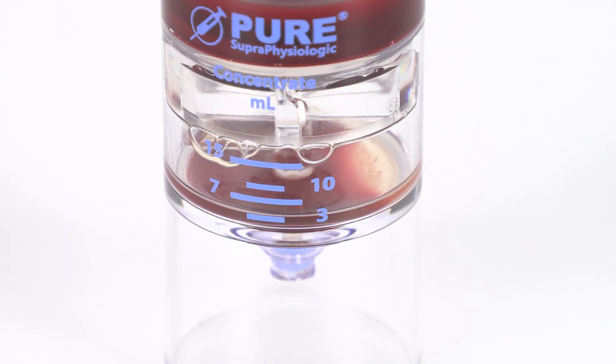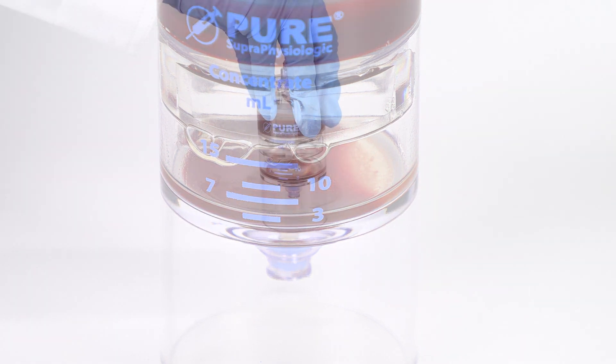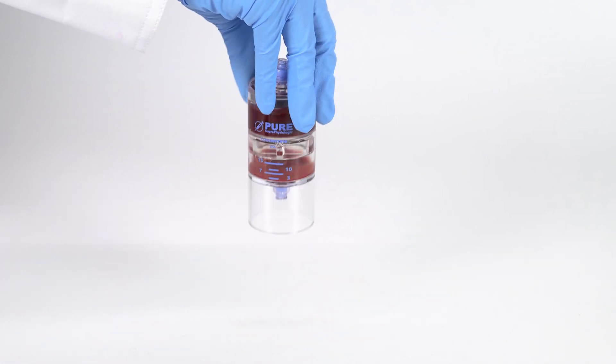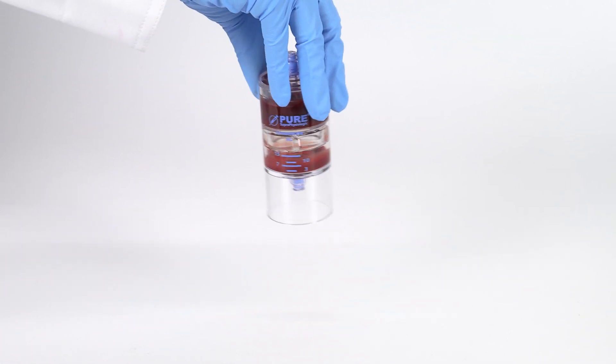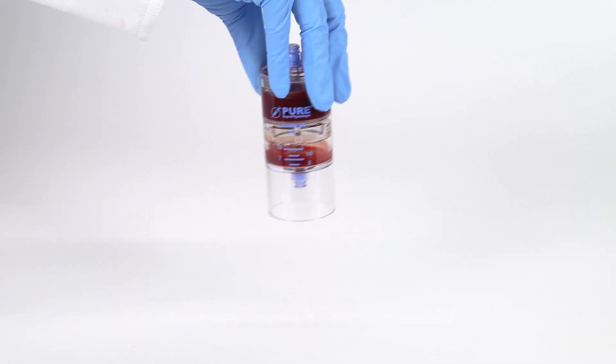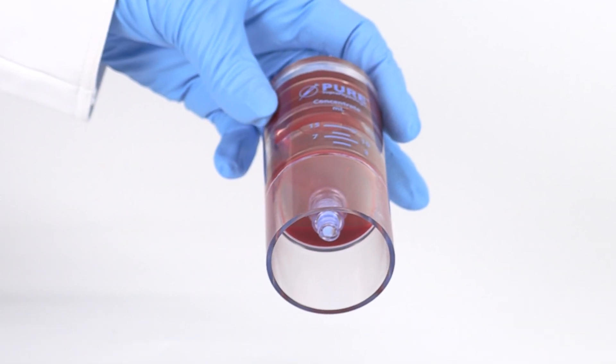The bone marrow buffy coat layer will be clearly visible at the bottom of the device. Resuspend the cell concentrate back into the plasma by rocking and swirling the device back and forth. Do this until all of the concentrate have been re-suspended into the plasma and is no longer visible at the bottom of the device.